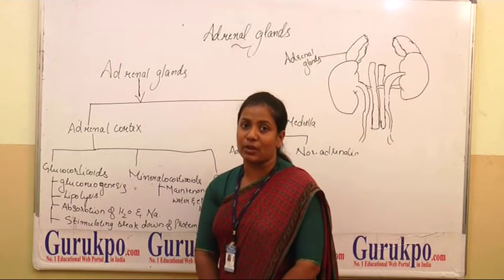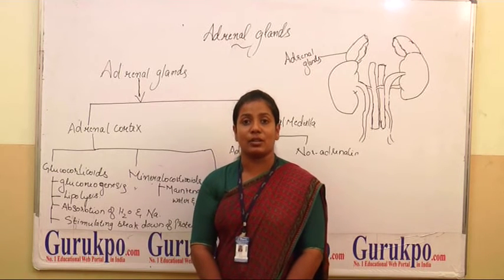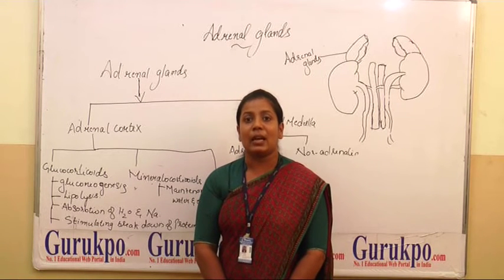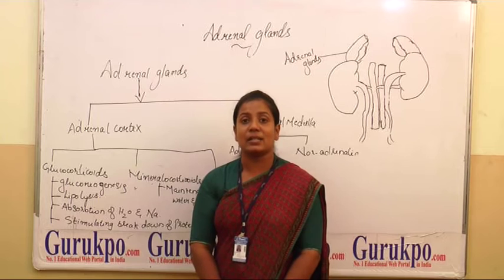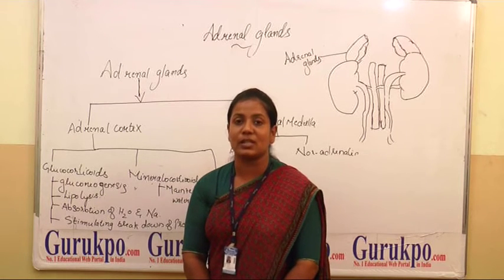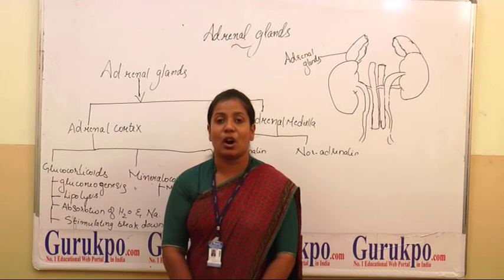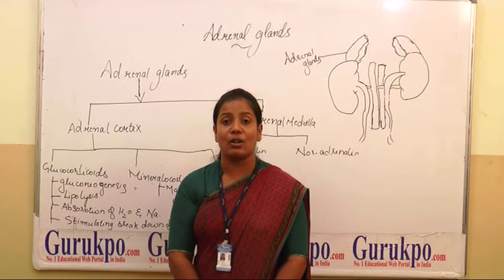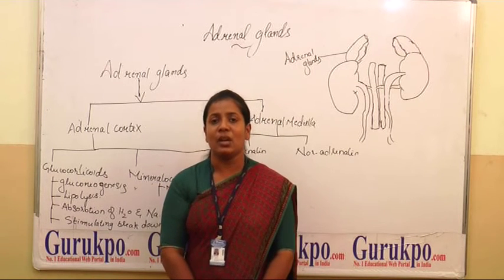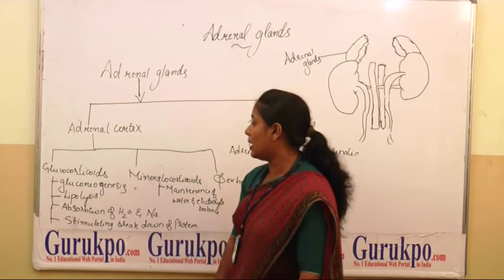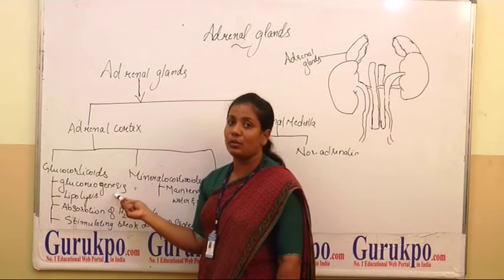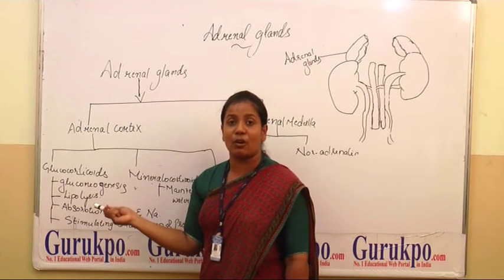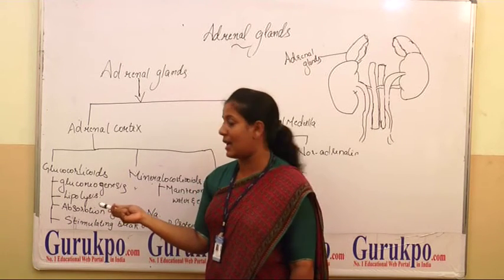Examples of glucocorticoids are cortisone, corticosterone, and cortisol. They help the body regulate metabolic rate and the response to stress. Their secretion is stimulated by ACTH from the anterior pituitary and also by stress. They assist in different functions like gluconeogenesis — the formation of new glucose — and lipolysis, which is the breakdown of triglycerides into fatty acids.